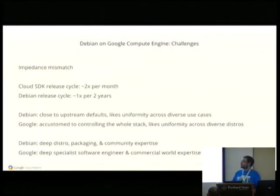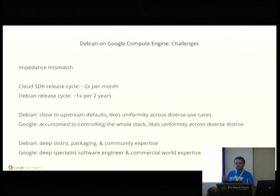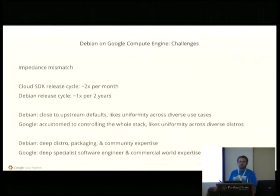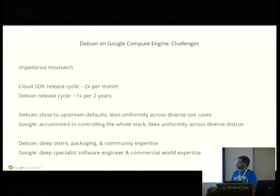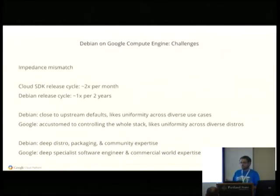The main challenges have been an impedance mismatch — to use an engineering bit of jargon — between the normal way Googlers think and operate and the normal way Debian typically thinks and operates. For example, the Cloud SDK team has a rapid release cycle, often twice a month. Debian has an enterprise release cycle, often once every two years. Backports has been very useful for providing a middle ground. Debian in general likes to stay close to upstream defaults for all the software it ships and doesn't like to diverge too much in different use cases in out-of-the-box configuration. And I understand that — Debian needs to support the product and we're all volunteers here, not paid to work on Debian specifically.